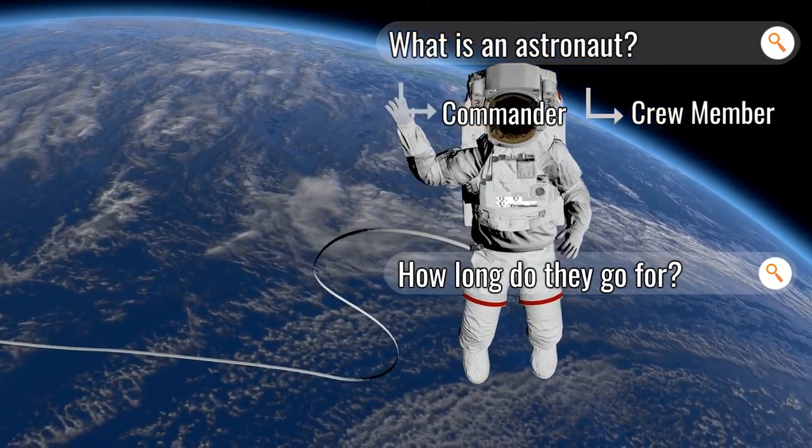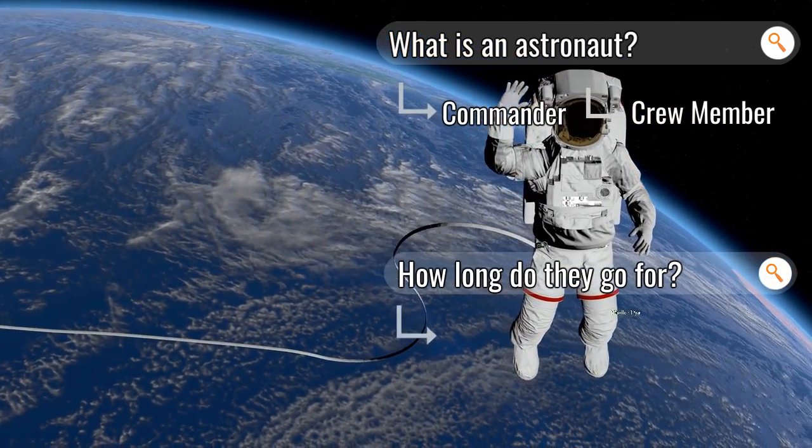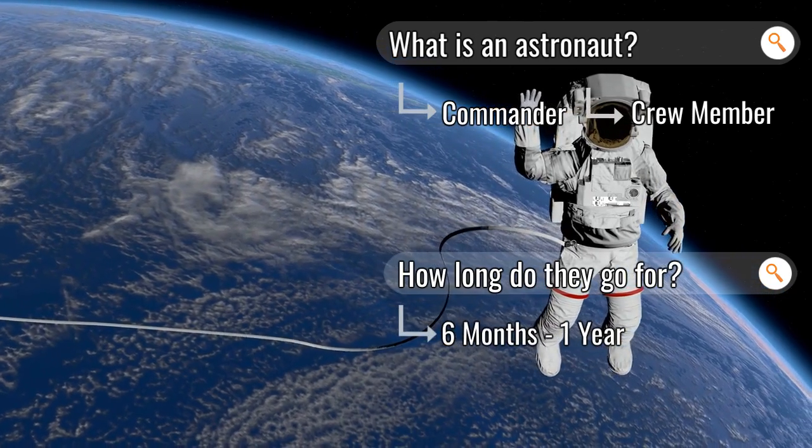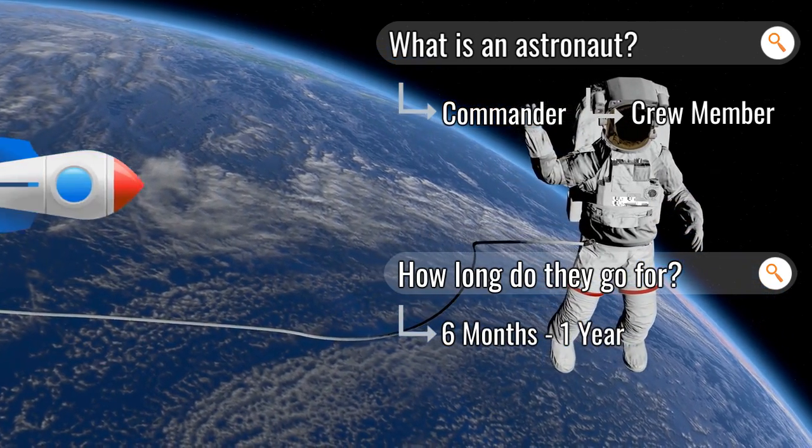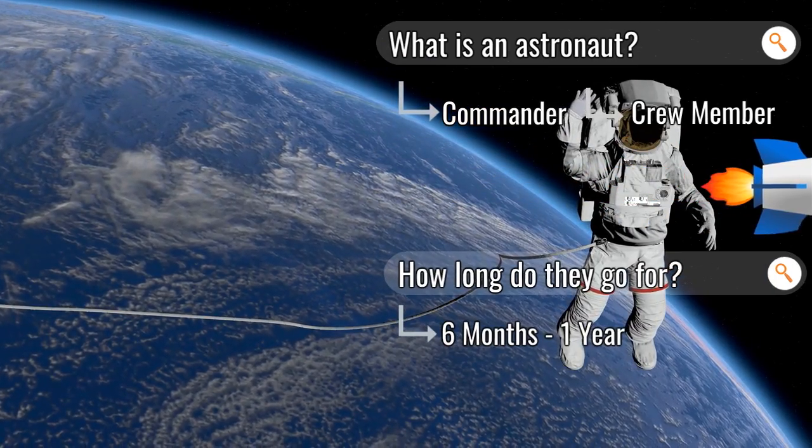Astronauts go to space for varying amounts of time, however the typical space mission lasts about six months, and some astronauts have stayed in space for over a year. A common destination for astronauts is the ISS, or the International Space Station.